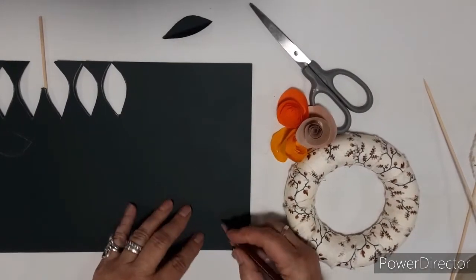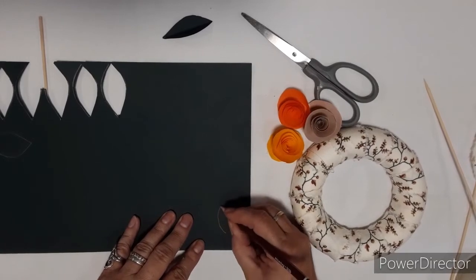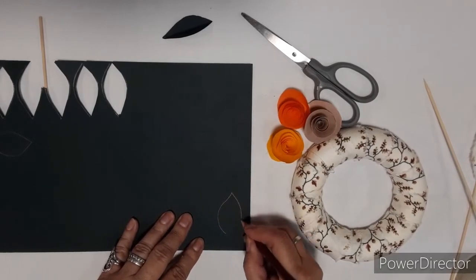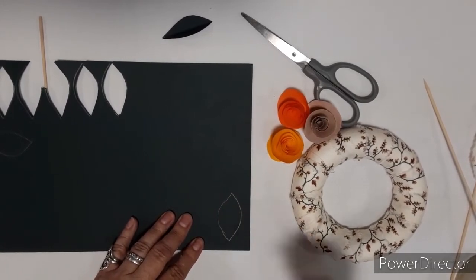So to make the leaf, you need to take the green card and draw out with the pencil a simple leaf shape.